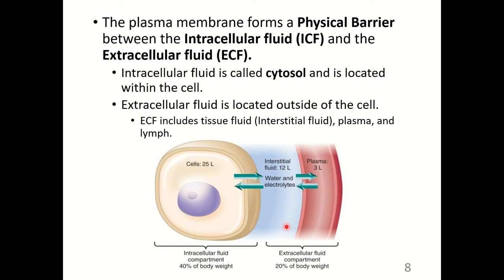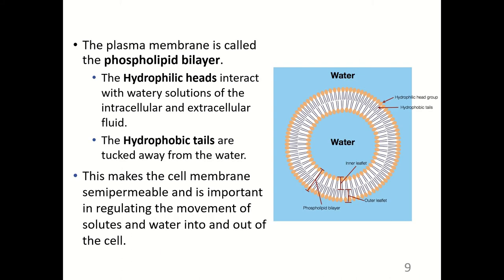The extracellular fluid comprises about 20% of our body's weight, and includes tissue fluid, plasma, and lymph. The plasma membrane is called the phospholipid bilayer. Hydrophilic heads interact with the watery solutions of the intracellular and extracellular fluid. The hydrophobic tails are tucked away from the water, making the cell membrane semipermeable and important in regulating the movement of solutes and water into and out of the cell. These hydrophobic tails are made up of fatty acid chains.